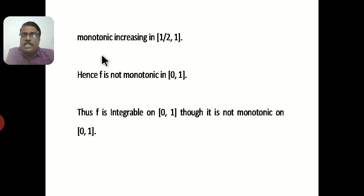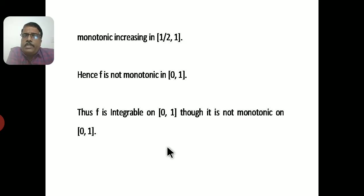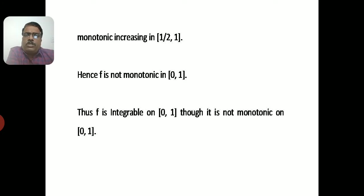Although f is not monotonic on [0, 1], f is integrable on [0, 1]. You can verify this by dividing the interval into subintervals of a fixed length, calculating the oscillatory sum, and showing it is less than epsilon. I will leave this as an exercise. Therefore, f is integrable but not monotonic.